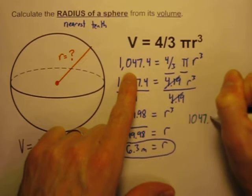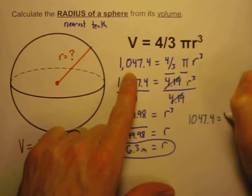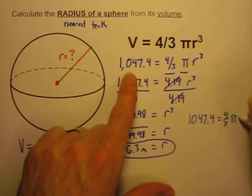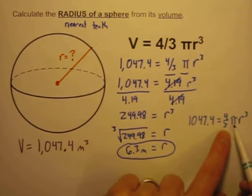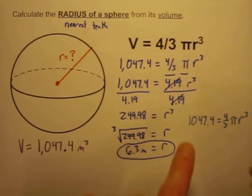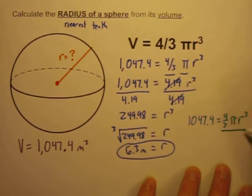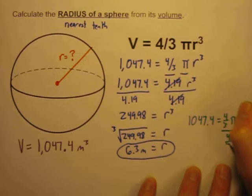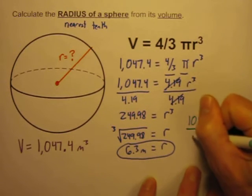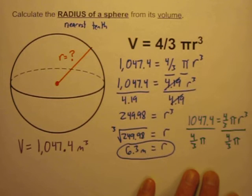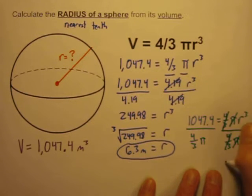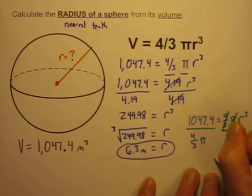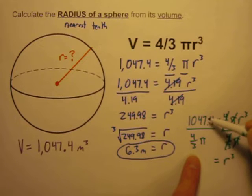That's 1,047.4 is equal to 4/3 times π times the radius to the third power, and in this method, instead of multiplying these two numbers together, and then rounding that off, and then dividing, I'm just going to go straight to the dividing. I'm going to divide this side by 4/3 times π, and divide this side by 4/3 times π, and the benefit here is that 4/3 divided by 4/3 is 1, and π divided by π is 1.